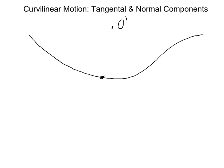The key to tangential and normal components is a coordinate system that has its origin on the curve. Here's our coordinate system with n, which is our normal, and t, which is tangential.